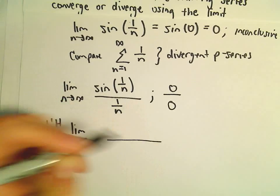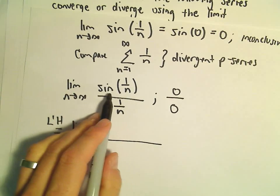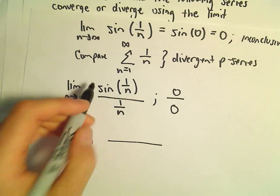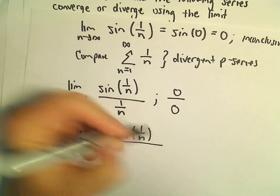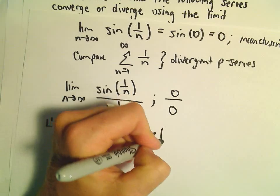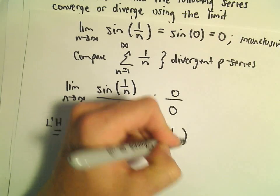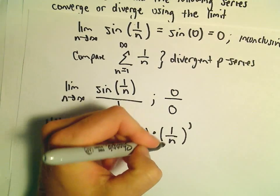So we'll have to take the derivative of the numerator. So we'll have to use the chain rule. So the derivative of sine is cosine. We'll leave the 1 over n alone. And then we would have to multiply by the derivative of 1 over n. That would be the chain rule.